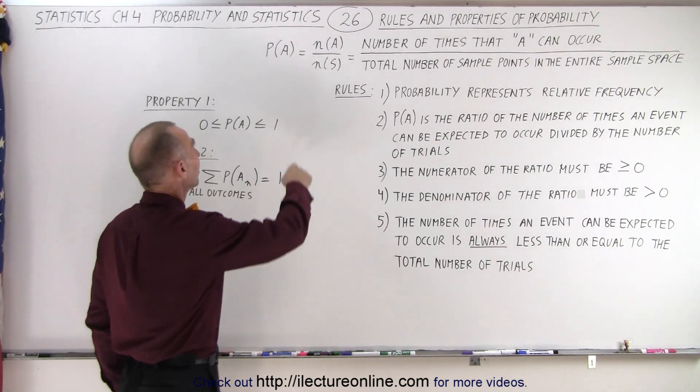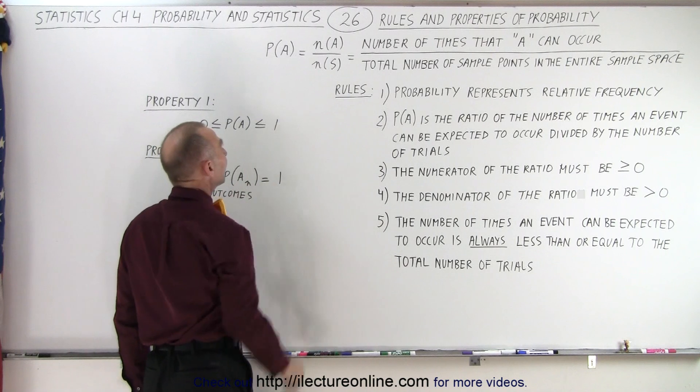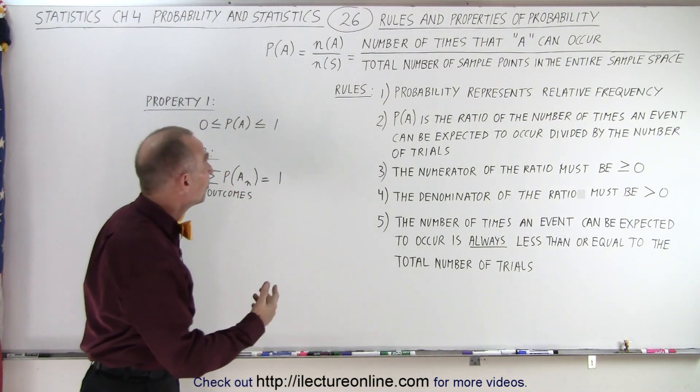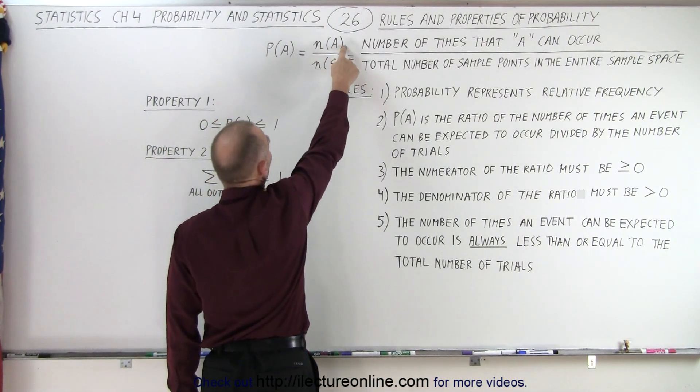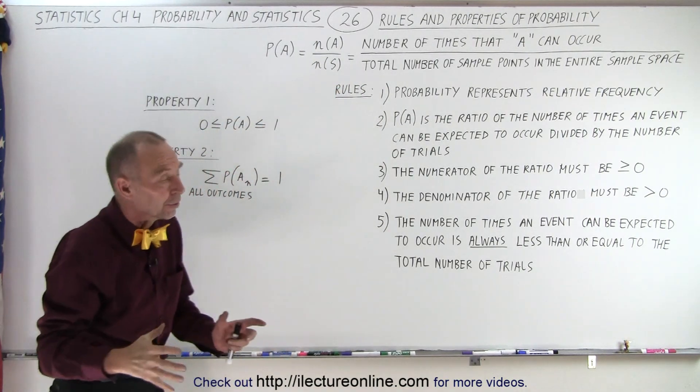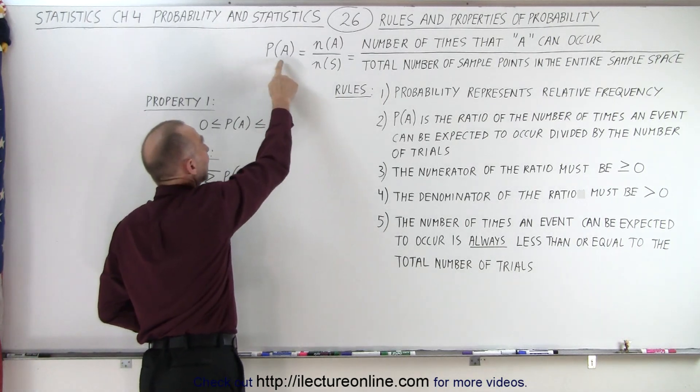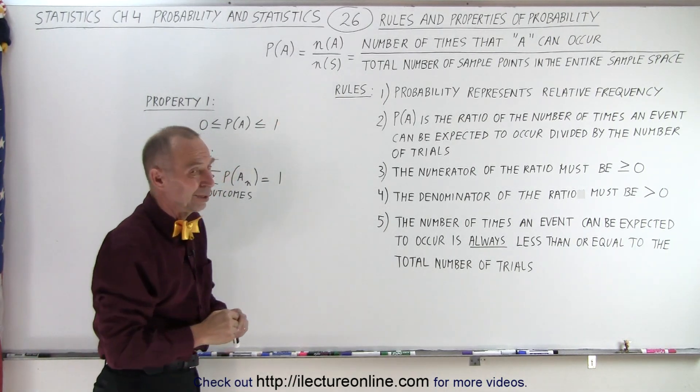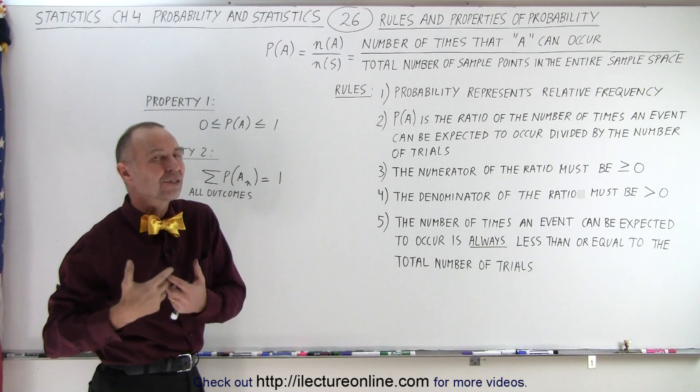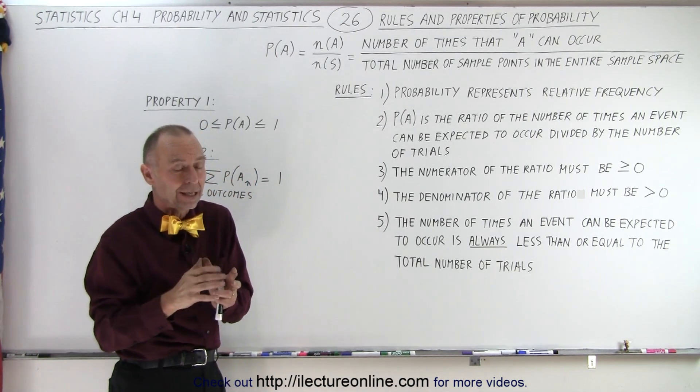First, let's define the concept. The probability of event A, or outcome A, is equal to the number of times that A can occur divided by the total number of sample points in the entire sample space. So that ratio is the probability that A will occur, or in this case, that A is expected to occur, because what actually happens and what we expect to happen are not the same thing.